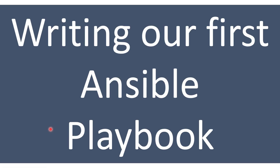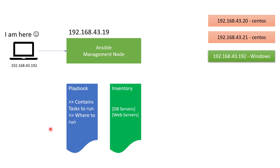Now let's create our first Ansible playbook. Before we start, let me explain the demo environment so you have full understanding of our lab setup and can replicate it. This is my workstation with IP address 192.168.43.192, running Windows. I have three servers: the first server has Ansible installed and is the Ansible management node, with IP address 192.168.43.19 — this is where we will create our playbooks and inventories.